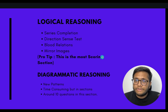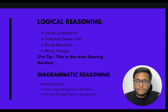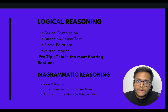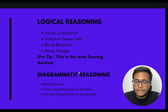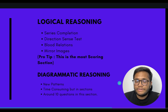Logical reasoning is the easiest section and the most scoring. Questions are less time-consuming — if you know the concept, you can solve a question within 50–60 seconds. Question types include series completion (finding the next number in a pattern), directions (tracking movement and calculating distance), blood relations, and mirror images (identifying the correct mirror image of a given figure). Focus on this section for maximum scoring.